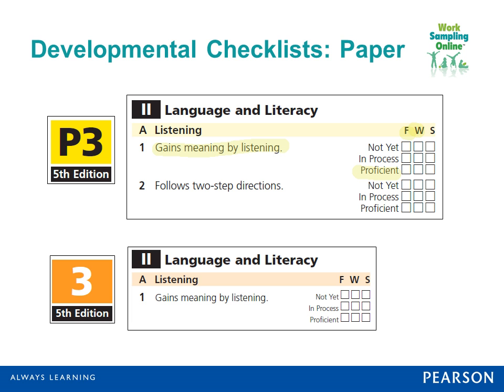Ratings are assigned fall, winter, and spring. If the child consistently demonstrates the ability to gain meaning by listening consistent with expectations, you'd assign a rating of proficient. Or you might decide based on the evidence that the child does not yet gain meaning by listening consistent with age or grade level expectations — consistent with descriptions in the developmental guidelines — in which case you'd assign a rating of not yet. Then there is the summary report.